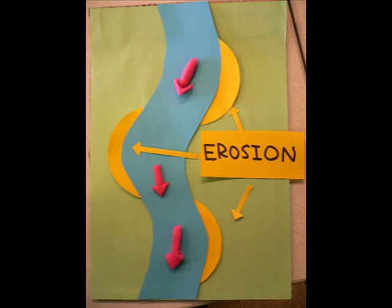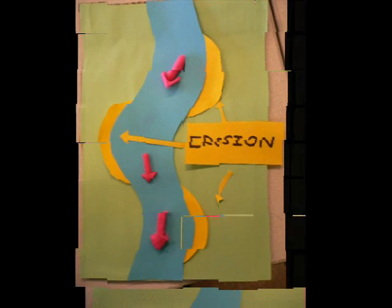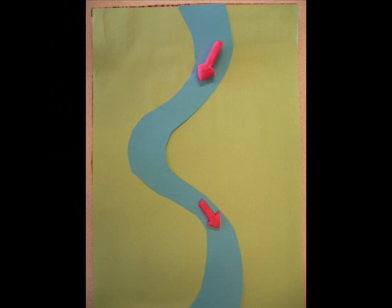An oxbow is a crescent shaped lake lying alongside a winding river. The oxbow lake is created over time as erosion and deposit of soil changes the river course.